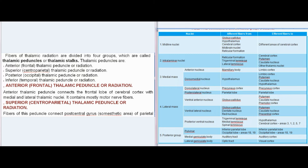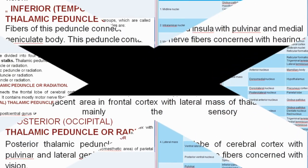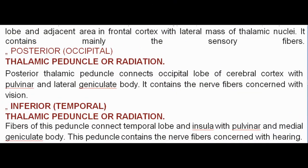Superior centroparietal thalamic peduncle: fibers of this peduncle connect the post-central gyrus and some aesthetic areas of the parietal lobe and adjacent areas in the frontal cortex with the lateral mass of thalamic nuclei. It contains mainly sensory fibers.